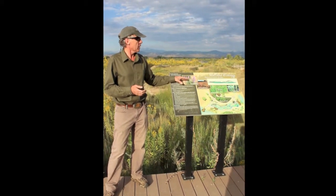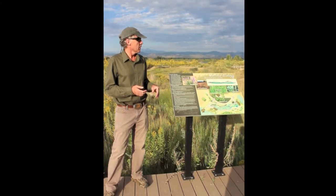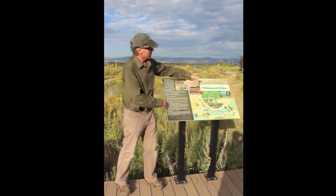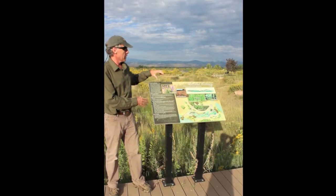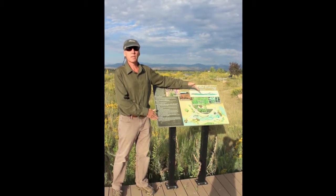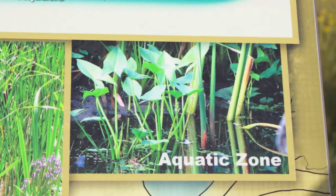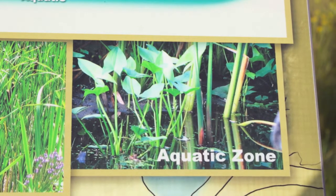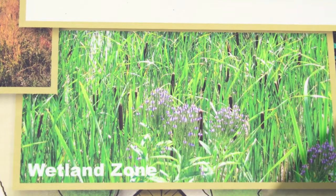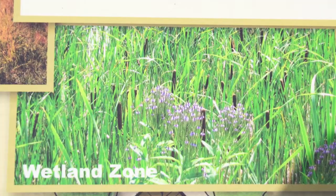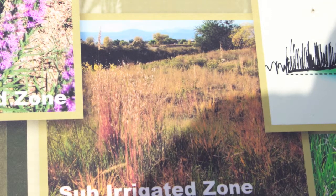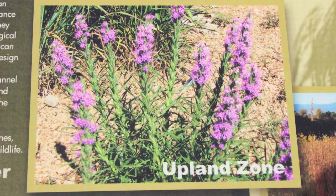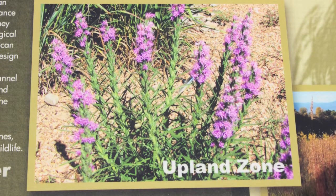The idea is that the general public and even engineers working on building stormwater ponds might not intuitively grasp the idea that there are zones within a pond. The zones are the aquatic zone — that is actual open water — the wetland zone, which is an area of saturated, sub-irrigated soils where there is moisture below the soil level, and the upland zone, which is a high and dry area.